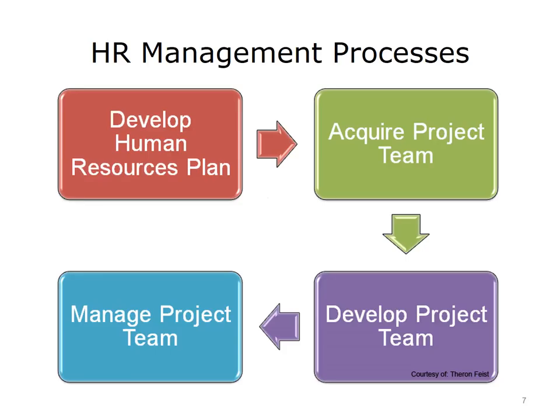We start by developing the HR plan during the project planning phase. Then, during project execution, we establish project staff assignments, assessing team performance and adjusting as required. And finally, utilizing change requests to ensure our project team remains appropriate for the project. The rest of the HR process section will look in detail at each of the processes within the HR management process.